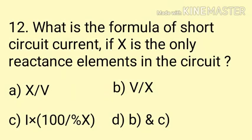Question number 12. What is the formula of short circuit current if reactance is the only element in the circuit? Option A: X / V. Option B: V / X. Option C: I × 100 / %X. Option D: both B and C. Option B, V / X, represents the short circuit current. And also Option C, I × 100 / %X, represents the short circuit current. So the correct answer is Option D — both B and C.